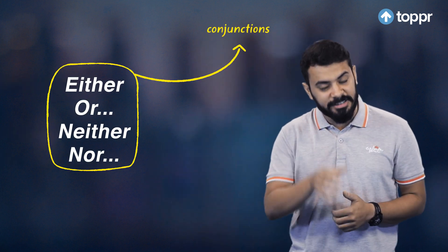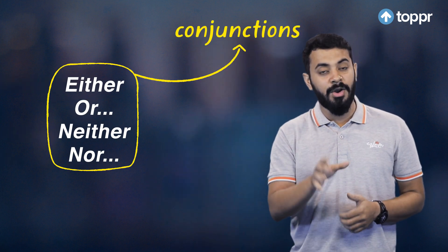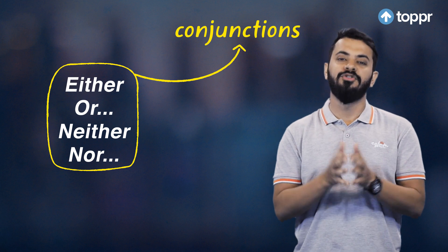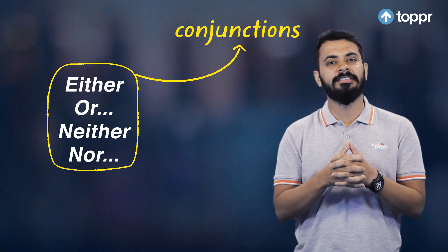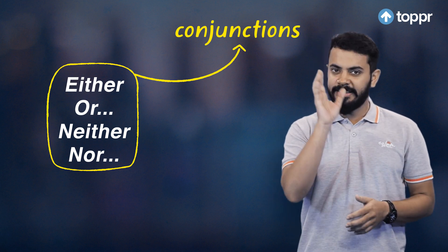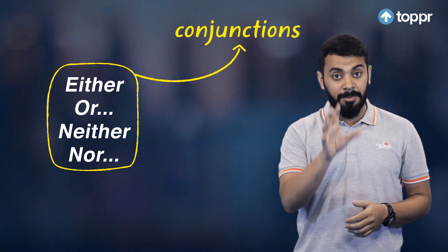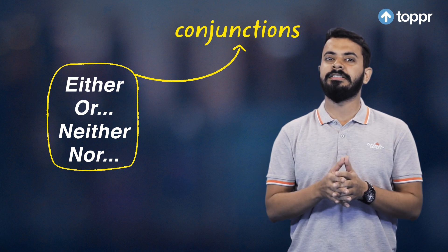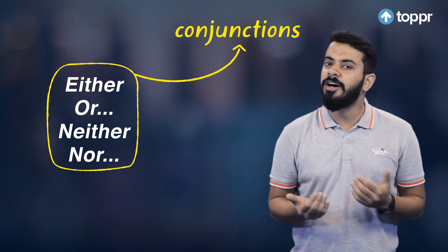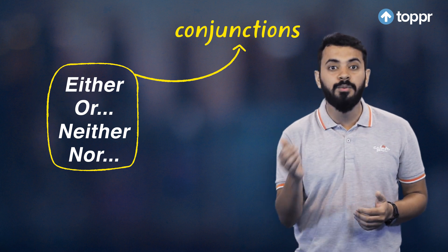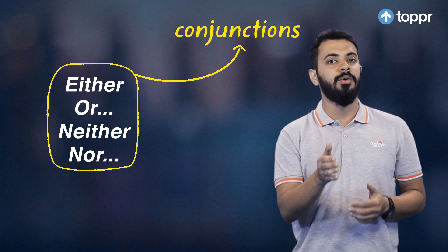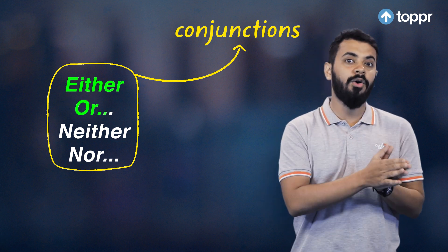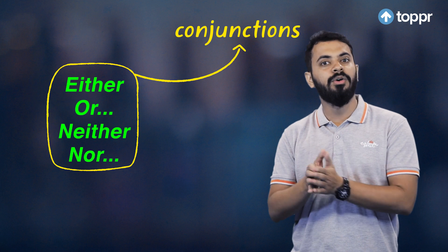These are just conjunctions which help join sentences. In this session of Subject-Verb Agreement, we'll discuss how the verb agrees with the subject when either, or, neither, nor constructions are used.